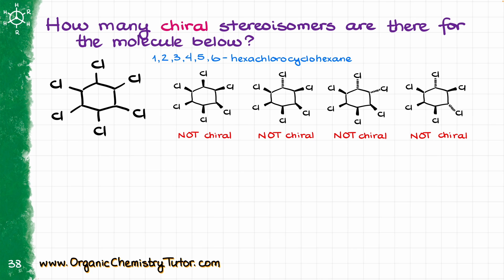So that means we need to continue with our search. What if now I have the two chlorines that are looking in the opposite direction be in a 1-4 position? Would that be chiral? No, it's not chiral, because we have one plane of symmetry here and another plane of symmetry over there, so the molecule will definitely superimpose with its own mirror image.